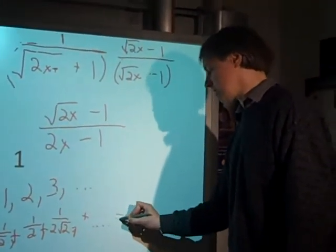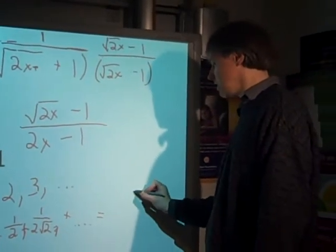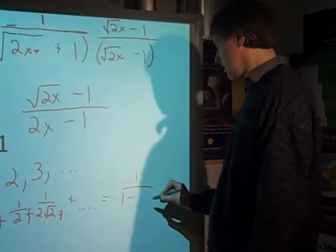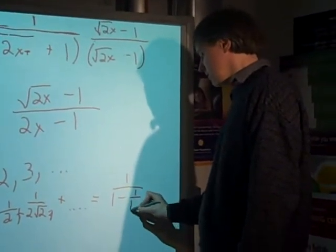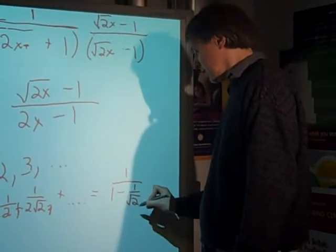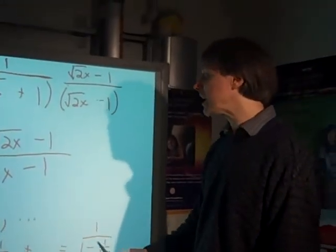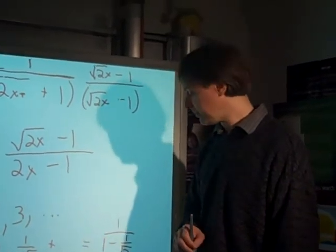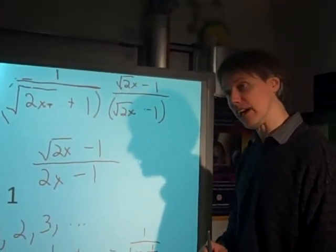And it turns out for this series, what this is going to be is one over one minus one over square root of two. And this is if I add infinite ones. That's what this is going to be. Anyway, I'll show that in our next lesson, how to derive that.